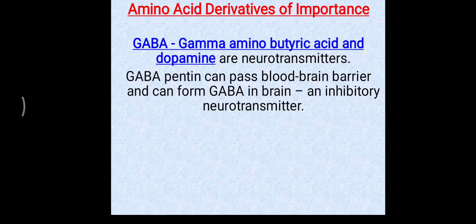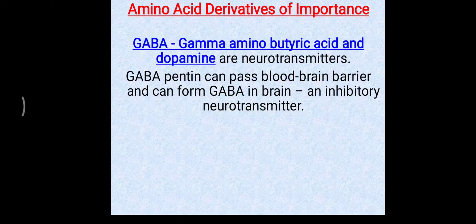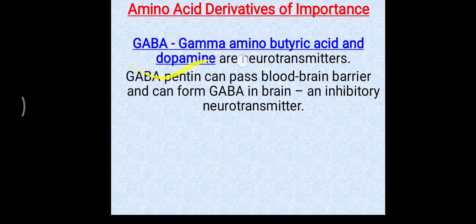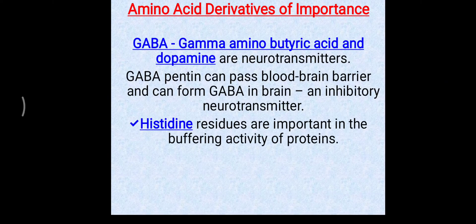Regarding GABA, you should remember that gabapentin can cross the blood-brain barrier and form GABA — gamma-amino butyric acid — in the brain. GABA works as an inhibitory neurotransmitter. Deficiency of GABA leads to convulsions, mostly in young children. This is an important fact to remember about GABA as a neurotransmitter.